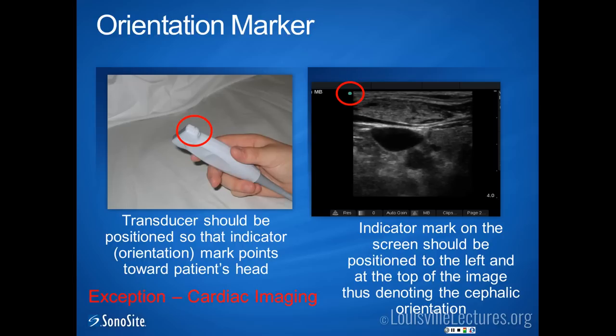Normally the indicator mark always points toward the patient's head. There is one exception — cardiac imaging. The American College of Cardiology has stated the indicator mark should go on the right side, because as you're doing cardiac images, the indicator mark cannot always be pointing at the patient's head. So by convention, when doing cardiac imaging, the American College of Cardiology has you put the indicator mark to the right side. This will be more clear when you take some of the courses with us.